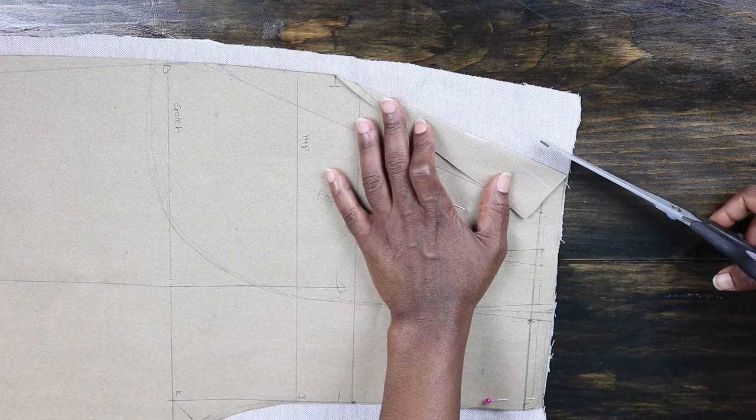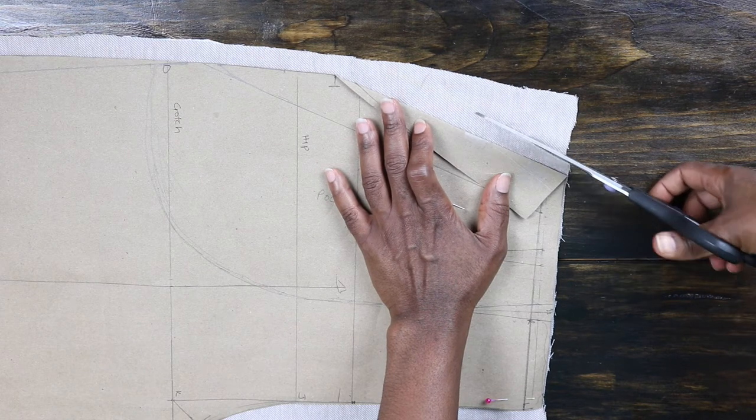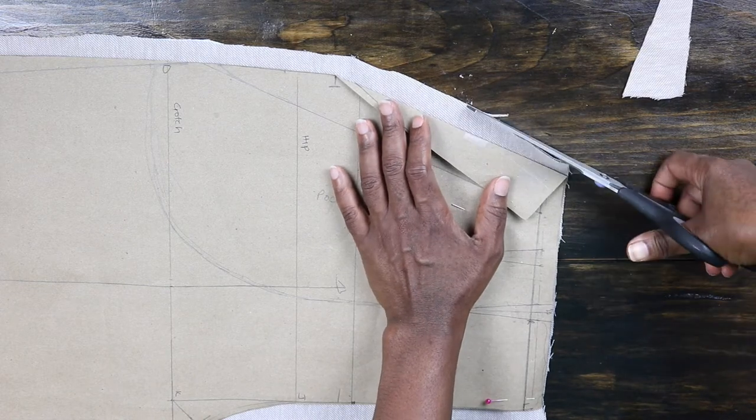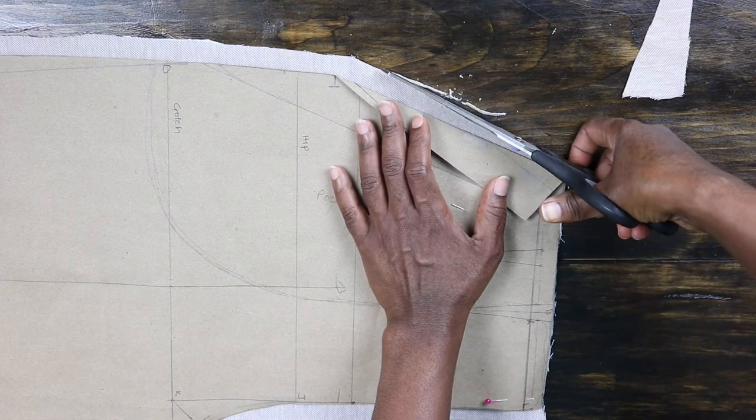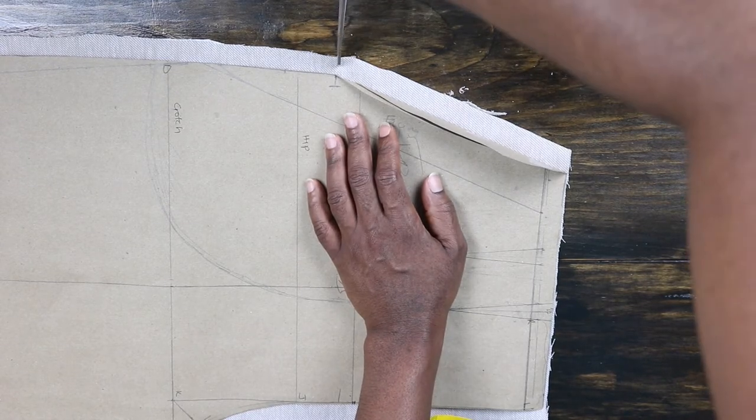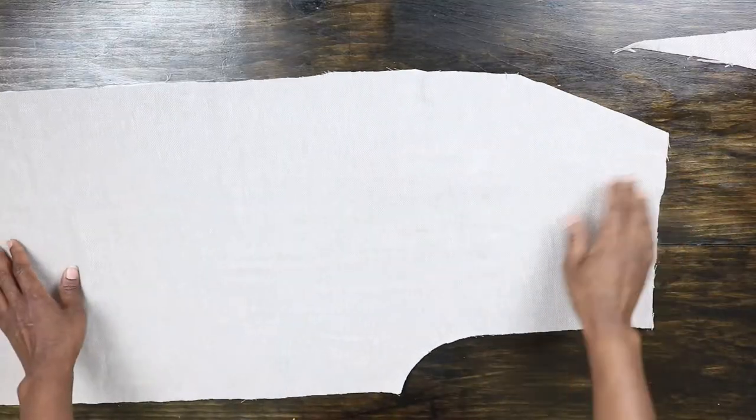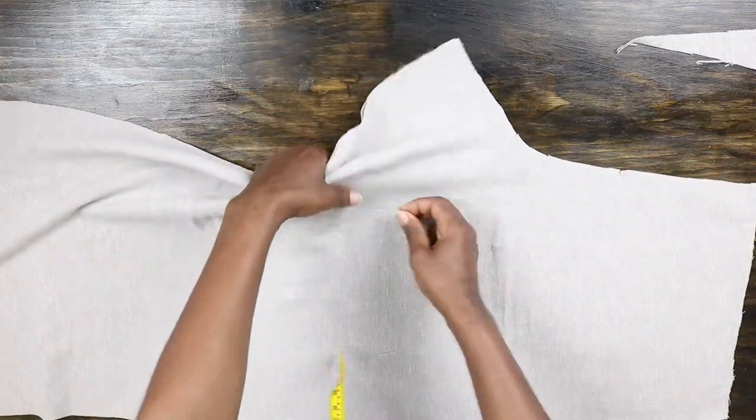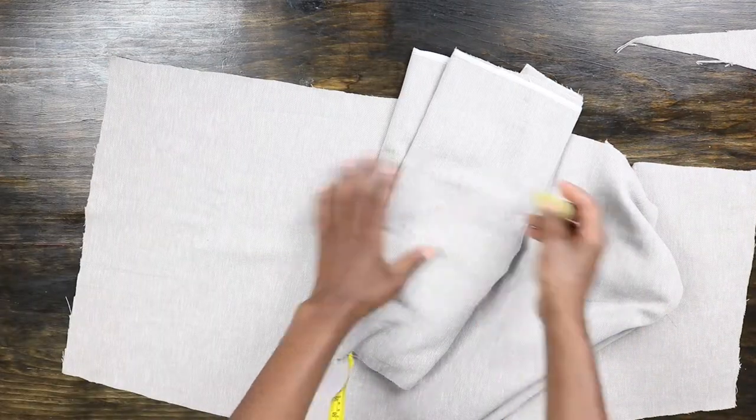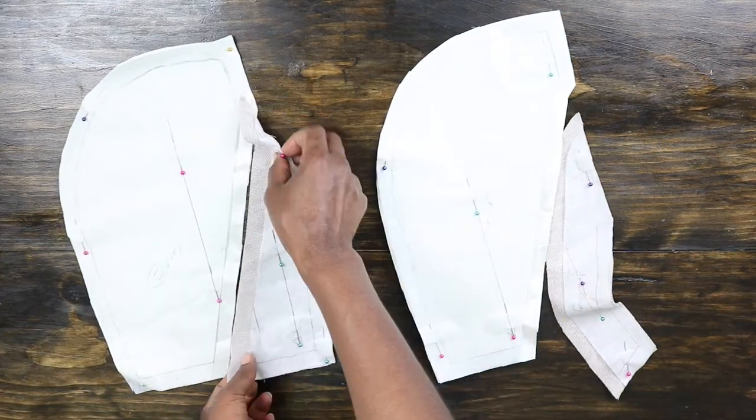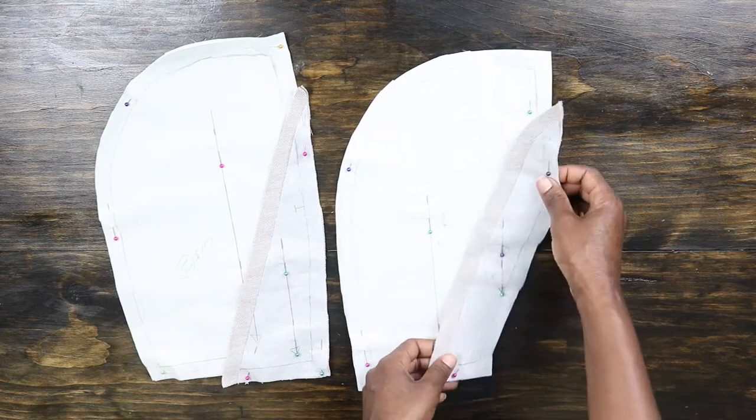Okay, I went ahead to add my 5/8 seam allowance and I cut the excess off. So this is the front and this is the back. I put them aside to work on the pocket. As I've already mentioned, this pocket pattern tutorial will be up on my channel very soon.